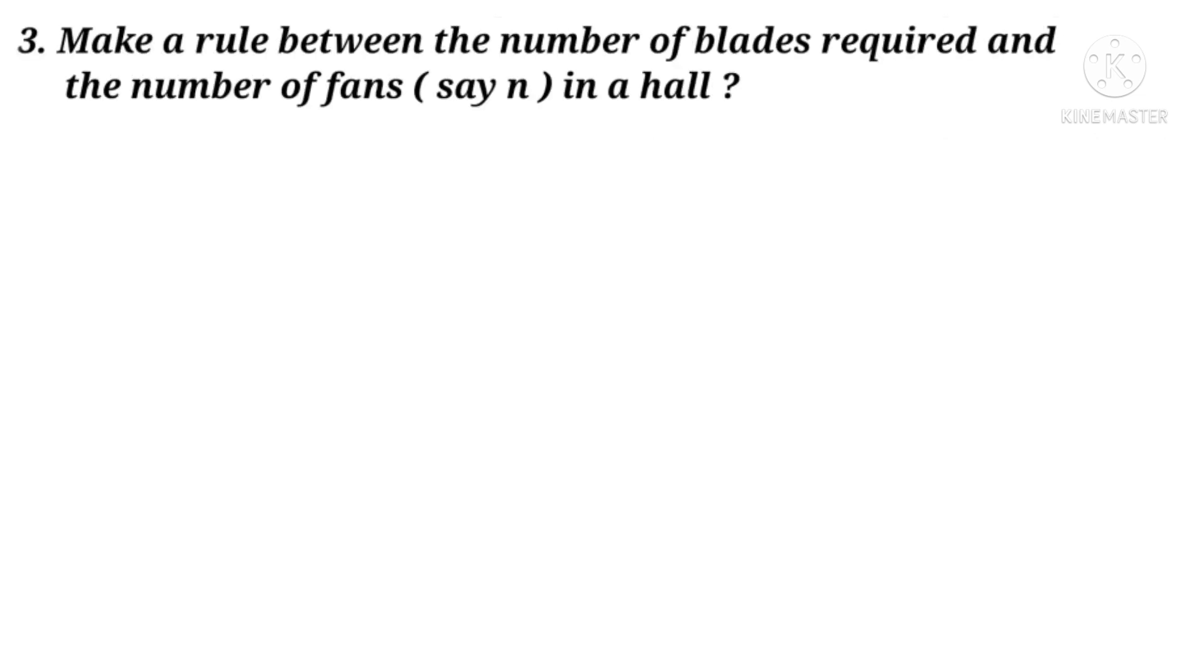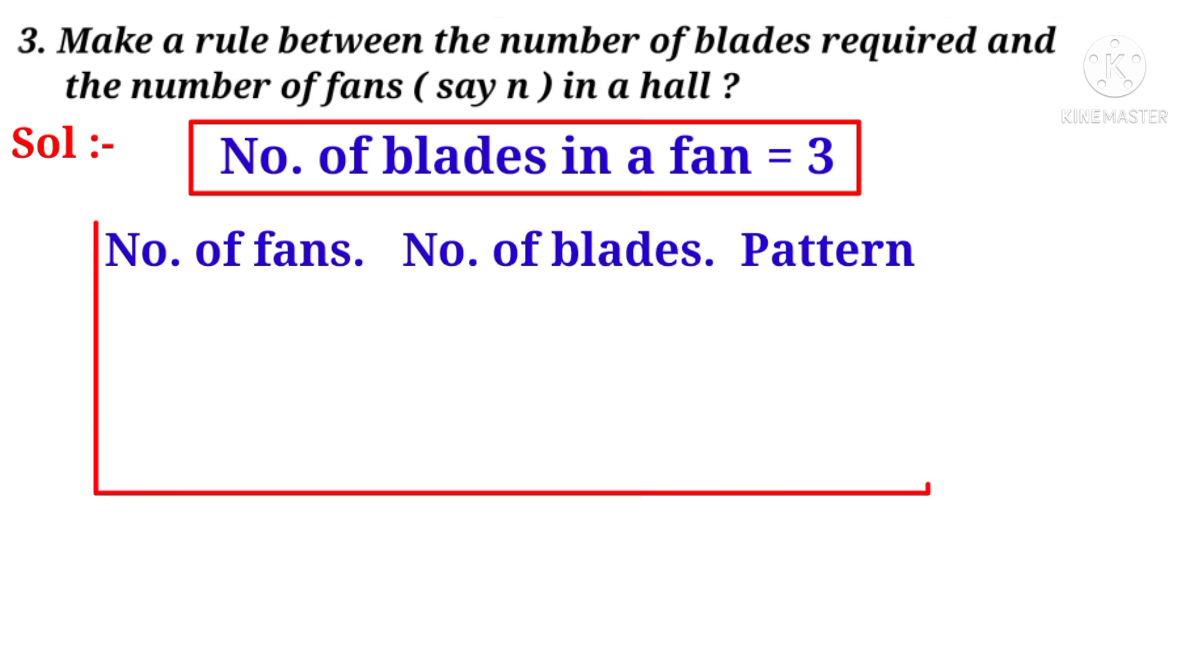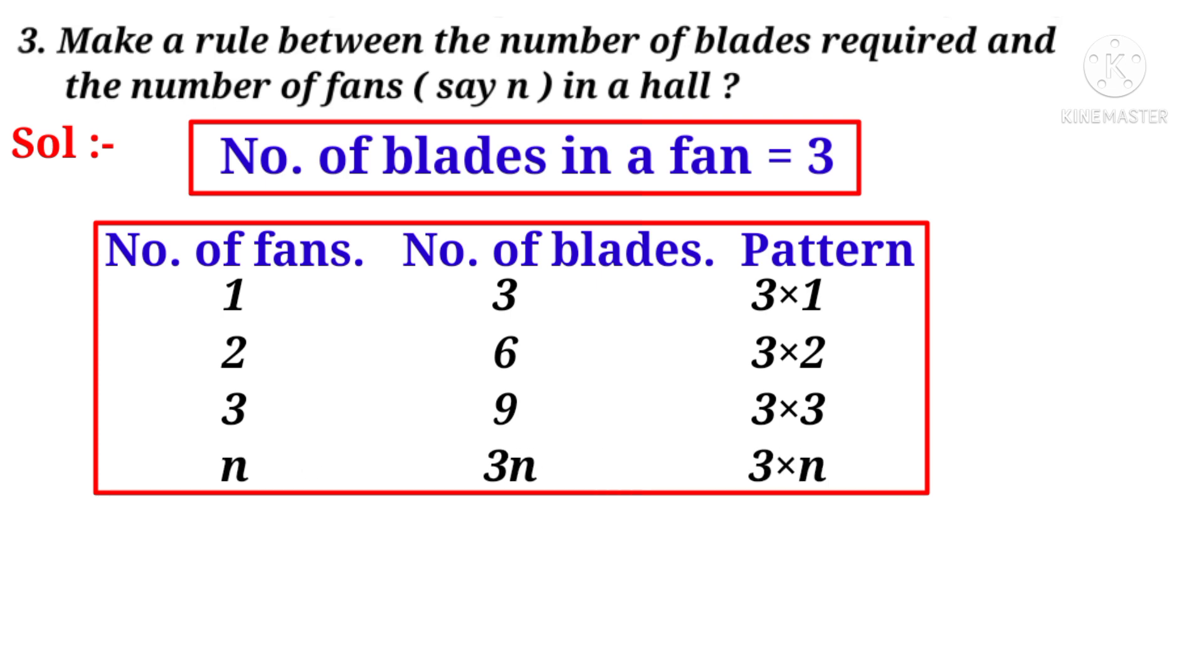Now third question. Make a rule between the number of blades required and the number of fans say n in a hall. Solution: Number of blades in a fan is equal to 3. Let us take a table format. If there is only one fan then there are 3 blades, that is 3 into 1. If there are 2 fans there are 6 blades, that is 3 into 2. If there are 3 fans there are 9 blades, that is 3 into 3. If there are n fans there are 3n blades, that is the pattern 3 into n. The rule or pattern is equal to 3 into n.